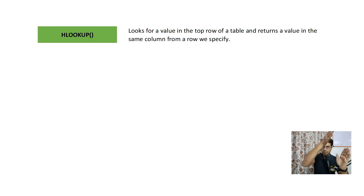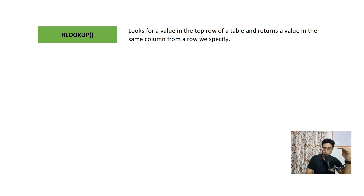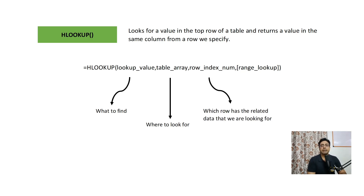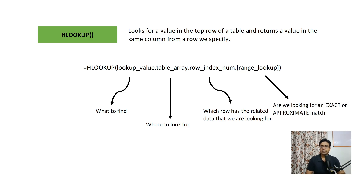Now what is HLOOKUP? VLOOKUP — V for vertical — searches for things in the first column vertically. HLOOKUP means horizontal lookup; it looks for a value in the top row of a table and returns a value in the same column from a row we specify. The syntax is very similar to VLOOKUP, except instead of column index number, you have a row index number — which row has the related data — and again a range lookup for exact or approximate match.